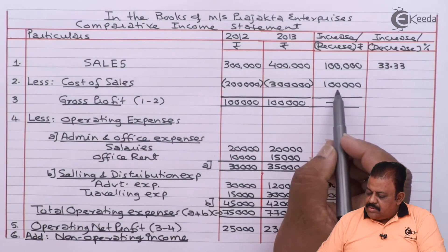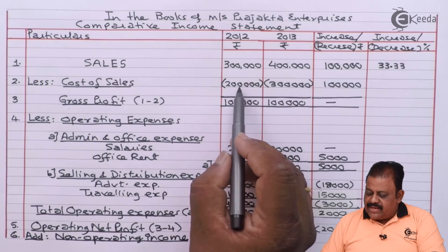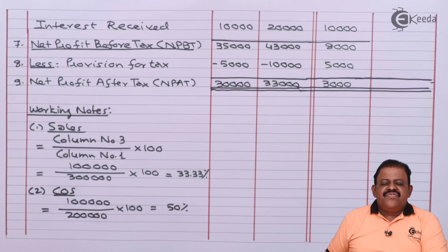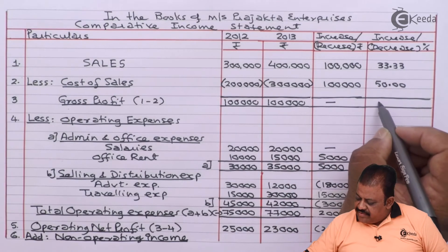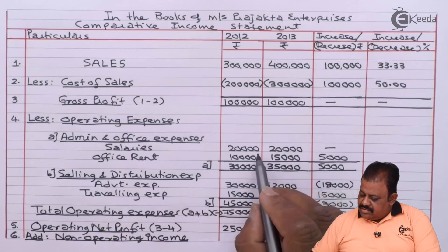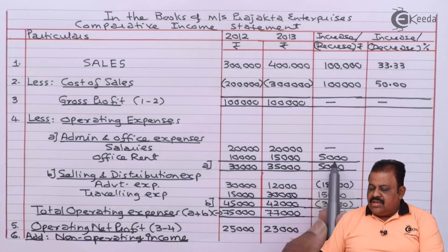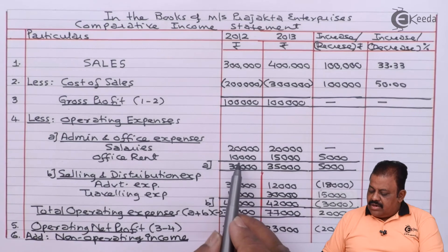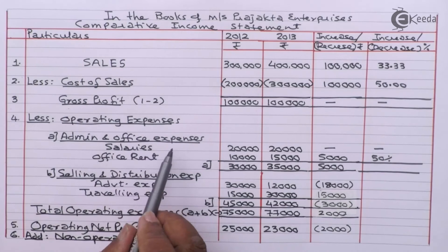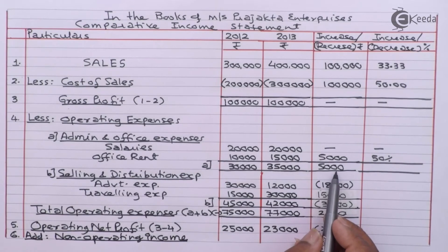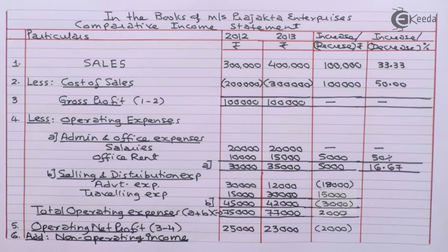For cost of sales: 1 lakh divided by 2 lakhs multiplied by 100 = 50%. For gross profit: no increase or decrease, so no percentage. Salaries: no change. Office rent: 5,000 divided by 10,000 multiplied by 100 = 50%. Total administration and office expenses: 5,000 divided by 30,000 multiplied by 100 = 16.67%.